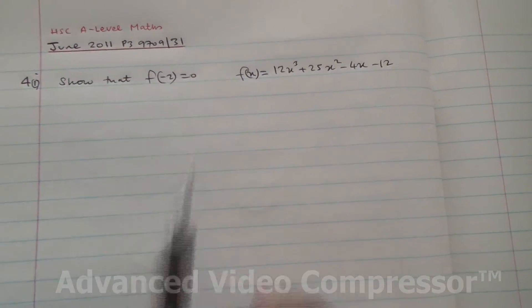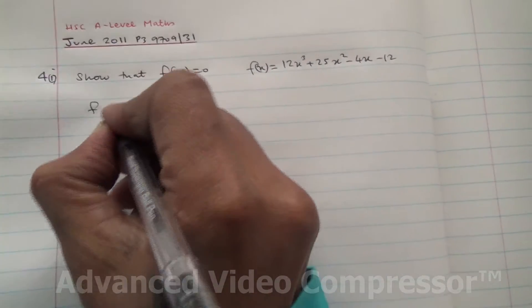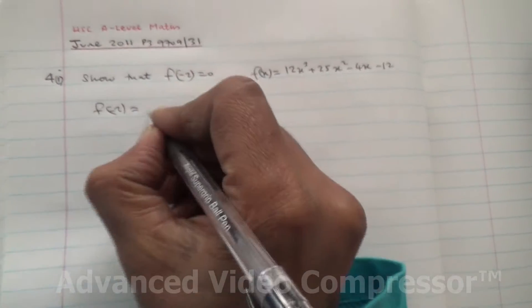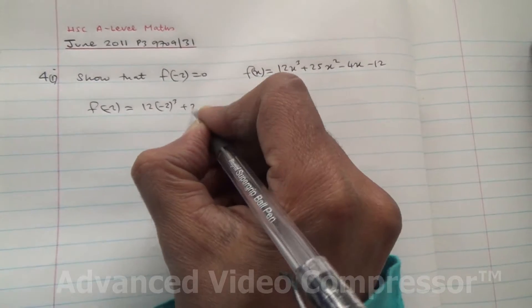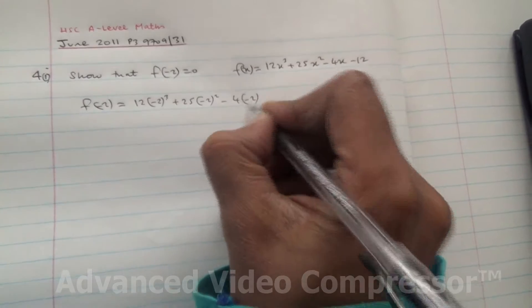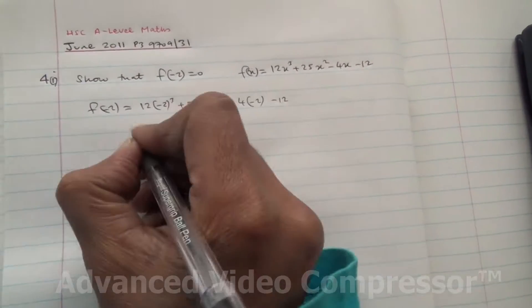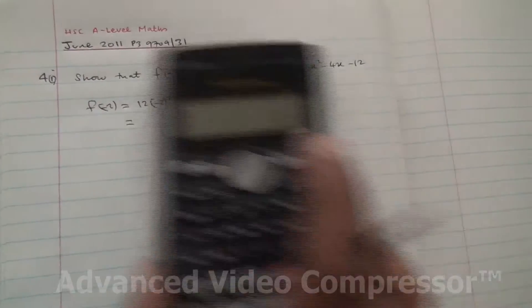We need to show that f(-2) is 0, so f(-2) is going to be 12 times (-2) to the cube plus 25 times (-2) to the square minus 4 times (-2) minus 12. So let's work this out in the calculator.